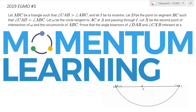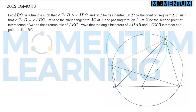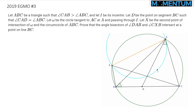This is 2019 European Girls Math Olympiad problem number 3, a geometry problem. We are given triangle ABC such that angle A is larger than angle B, and we also are given a point D on segment BC, on side BC of triangle ABC, such that angle CAD is congruent to angle B.